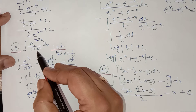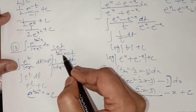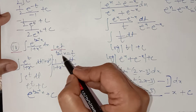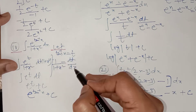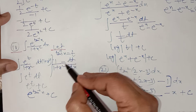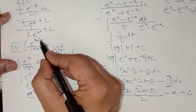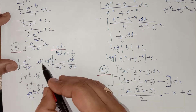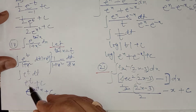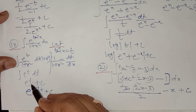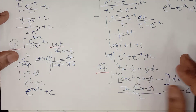Question number 18 is easy. If you let tan inverse x equal to t, its dt upon dx will be equal to 1 upon 1 plus x square — the derivative of tan inverse x. Replace the value of dx which is equal to (1 plus x square) dt. The (1 plus x square) will be cancelled out. So you only have to integrate e to the power t, which equals e to the power t, then replace the value of t which is tan inverse x. So the answer is e to the power tan inverse x plus c.